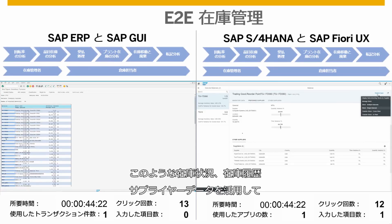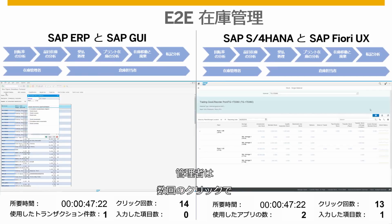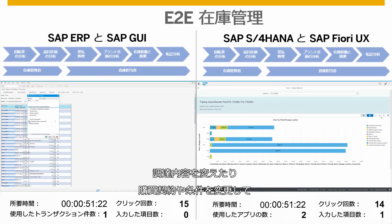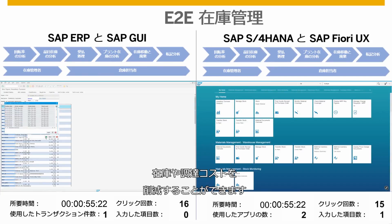With these complete insights into stock, stock history, and supplier data, the manager can trigger actions like changing the buying behavior, the purchasing contracts, and the conditions, and so reduce inventory and purchasing costs with just a few clicks.